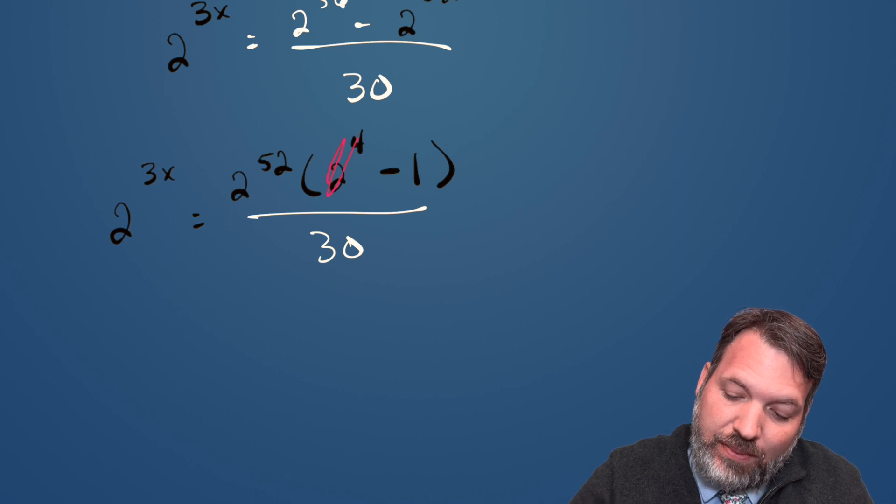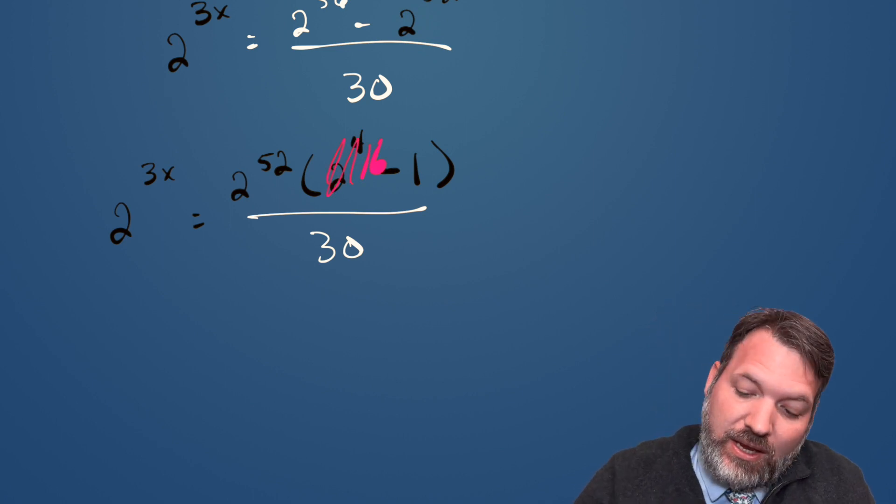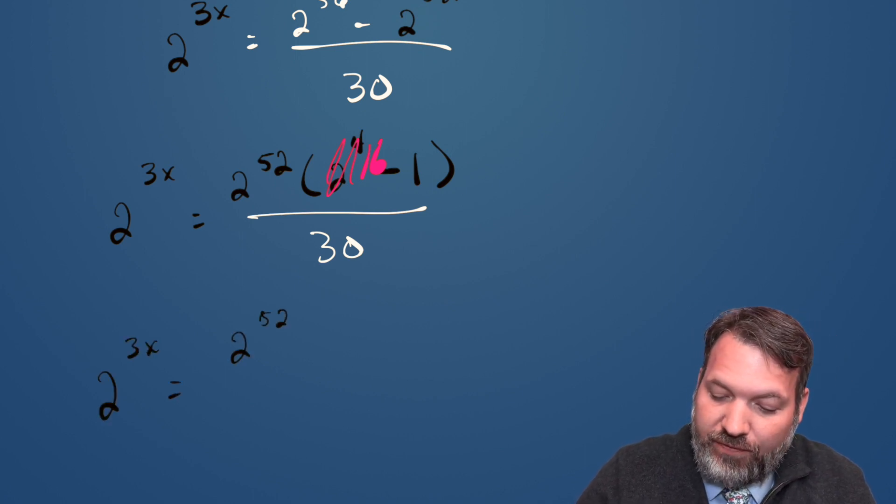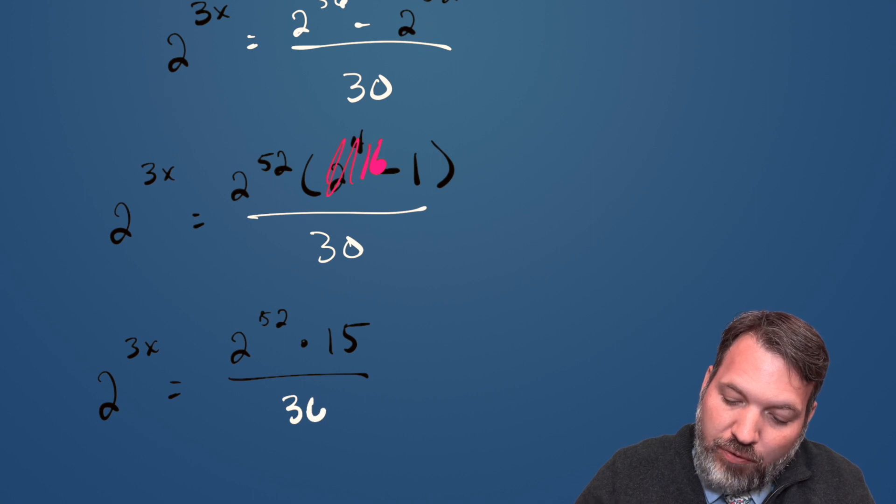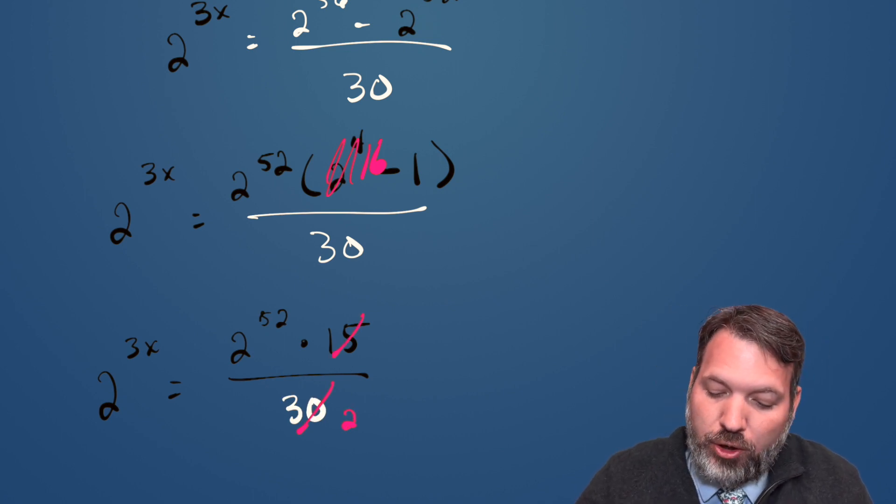2 to the 4th is, of course, the same thing as 16, and 16 minus 1 is 15. So in fact, this expression is the same as 2 to the 3x equals 2 to the 52nd times 15 over 30. And 15 over 30, of course, simplifies into 1 over 2.